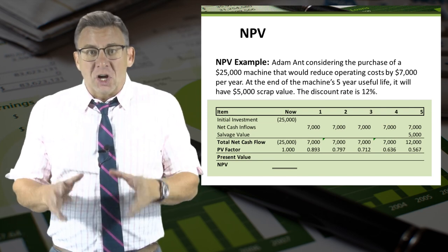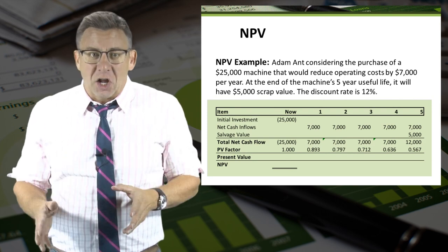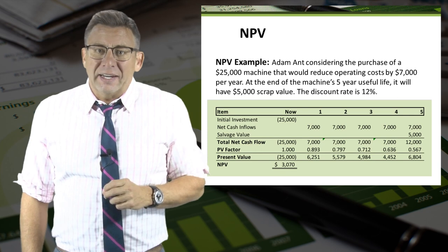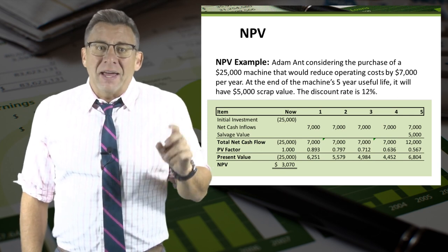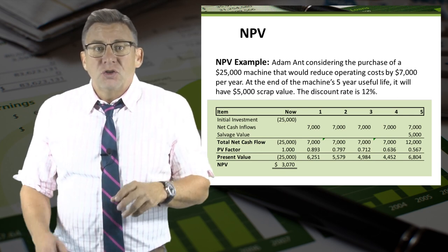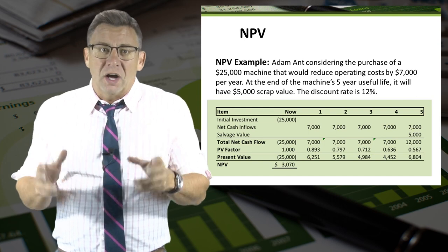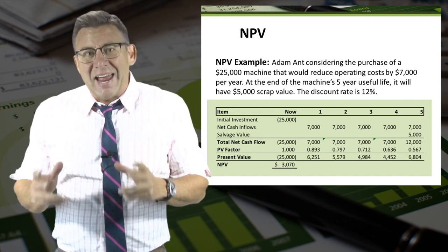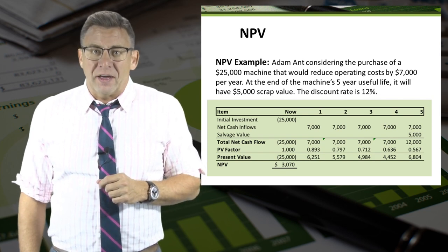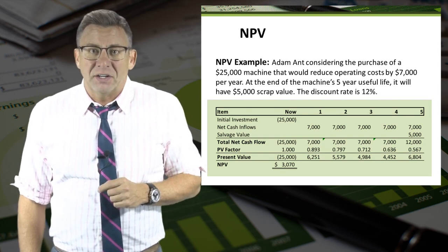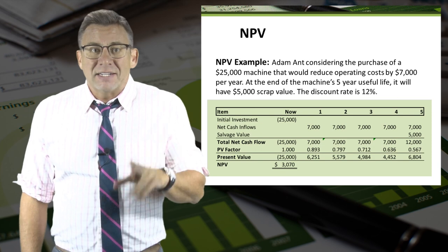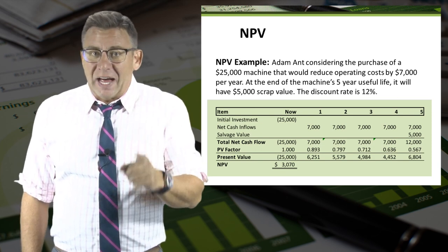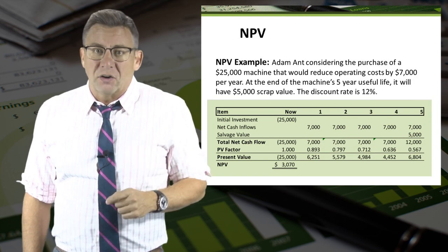The present value of a dollar today is always a dollar. So I multiply the total net cash flows by the present value factors to get the present value of cash flows. Then I sum them to get net present value of $3,070. Since it is positive, I can accept this project and know that the IRR of this project is greater than 12%.